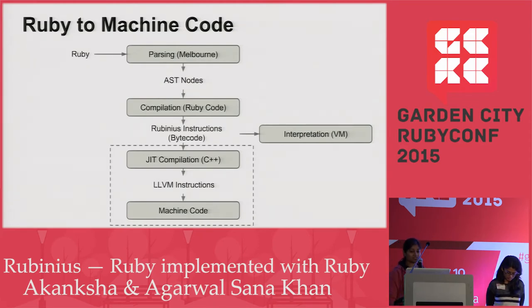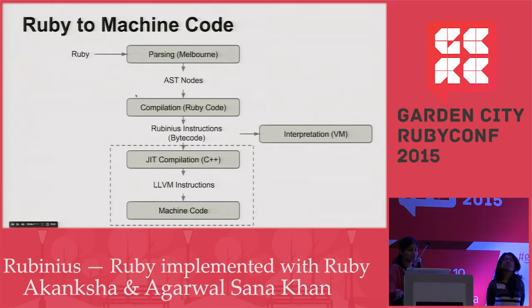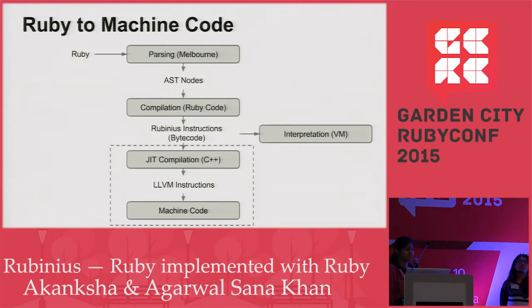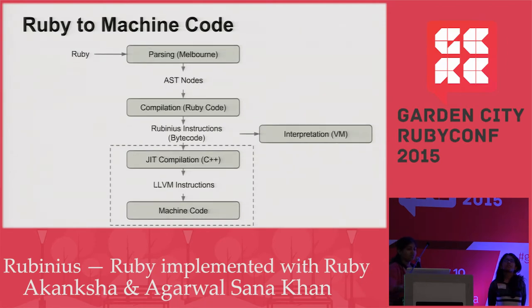After we get the Rubinius instructions, the part in the dotted box is optional. Rubinius instructions are fed to the interpreter, which interprets those instructions. For the first time, the code is fed to the interpreter and executed. JIT compilation is only done for methods which are frequently executed. If Rubinius figures out that code is being called again and again, it will convert it to LLVM instructions and then to machine code. It also saves a copy of compiled code in a .rbx directory. The second time you run the code, if the compiled code is already present, it loads that code only.